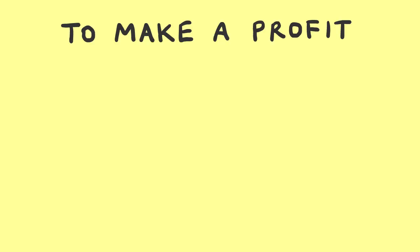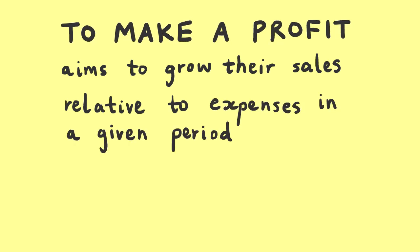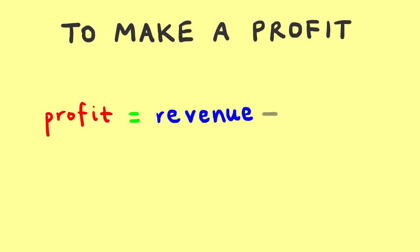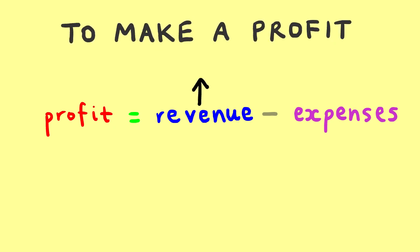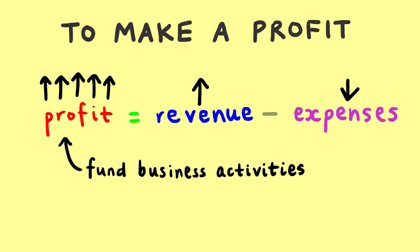The business objective to make a profit is where a business aims to grow their sales relative to expenses in a given period of time. Profit is equal to revenue minus expenses. Businesses aim to maximise the amount of revenue earned, whilst minimising the amount of expenses or costs incurred. Businesses aim to make a profit because it allows them to fund various business activities such as expansion and new innovation.